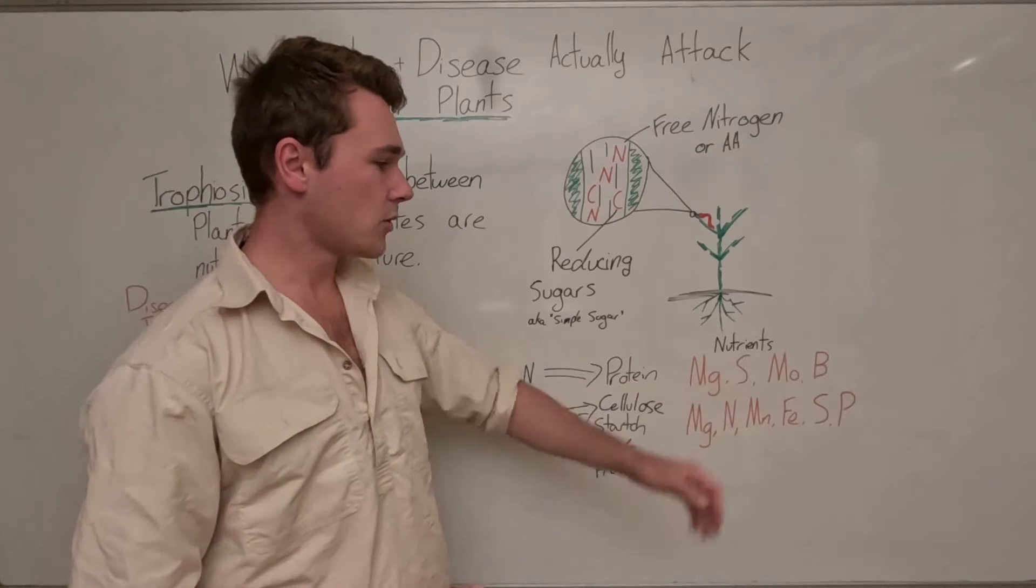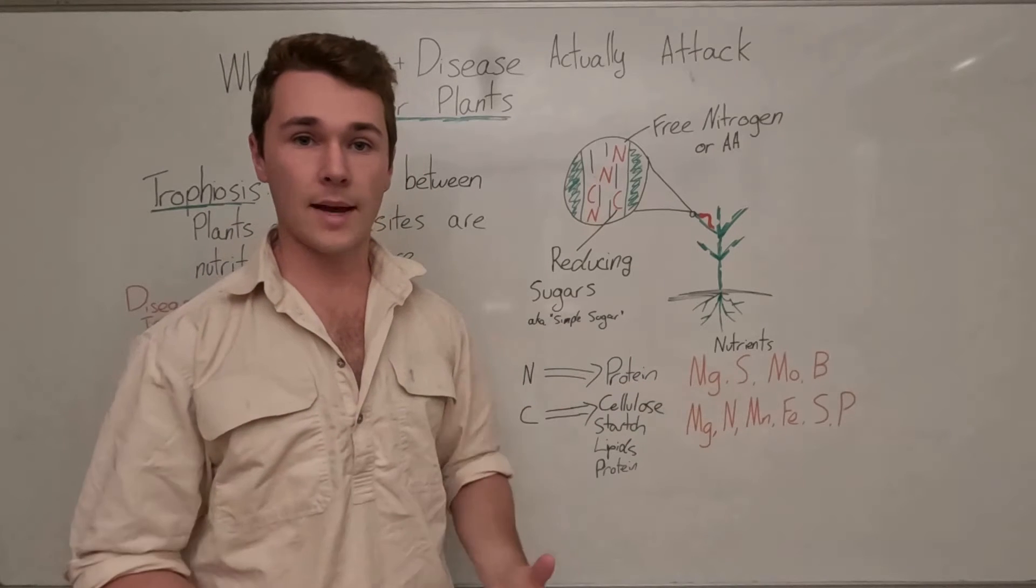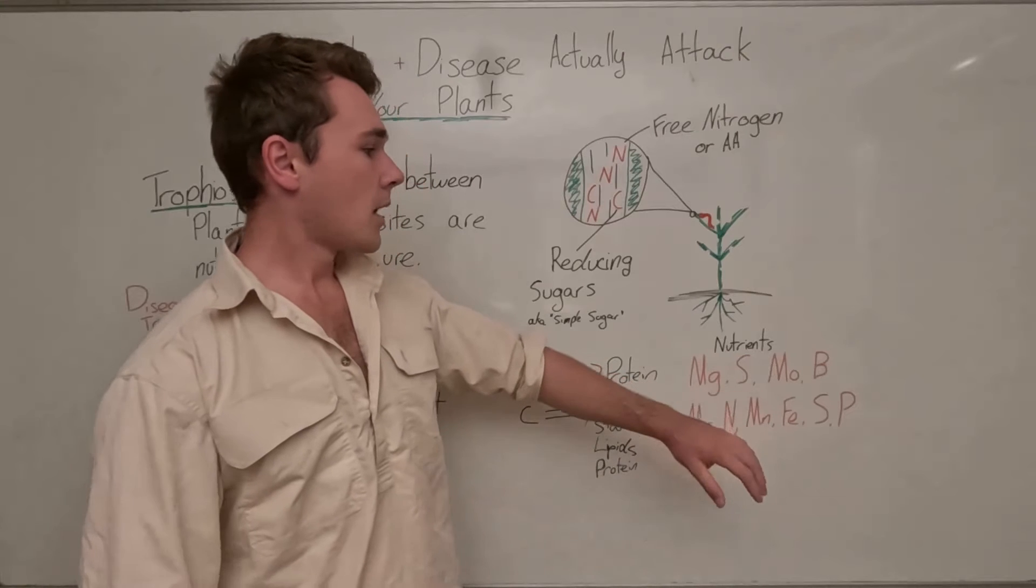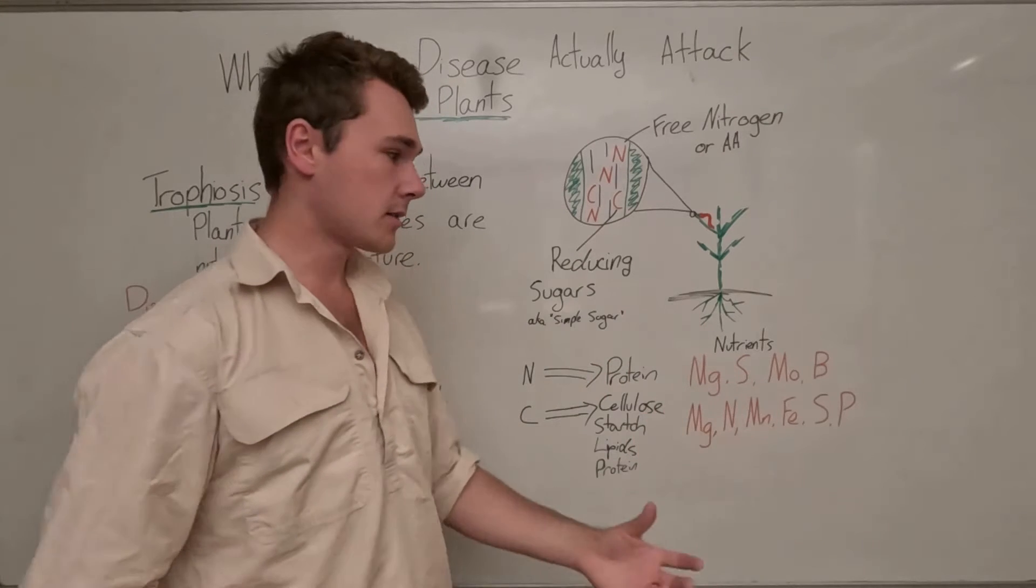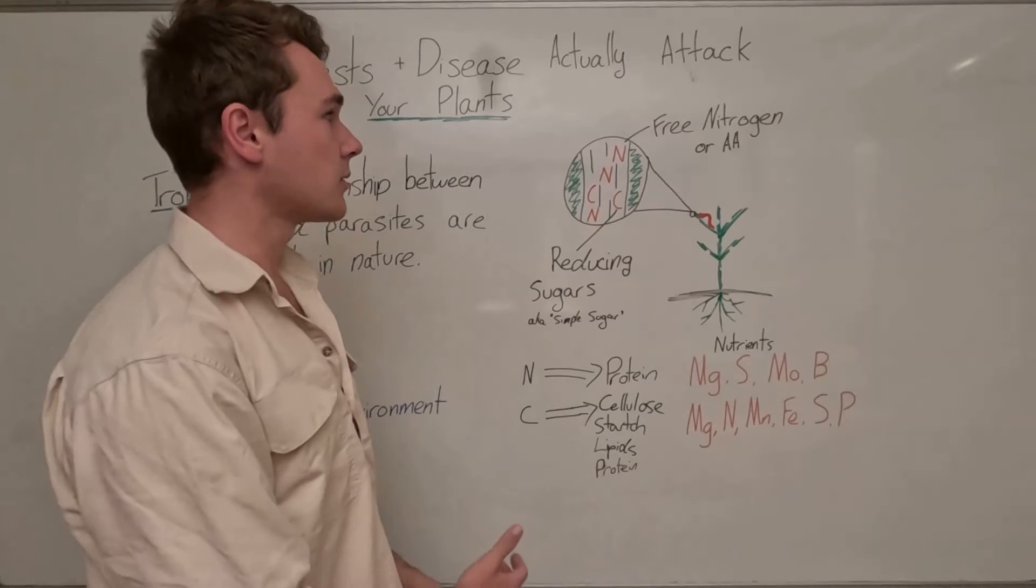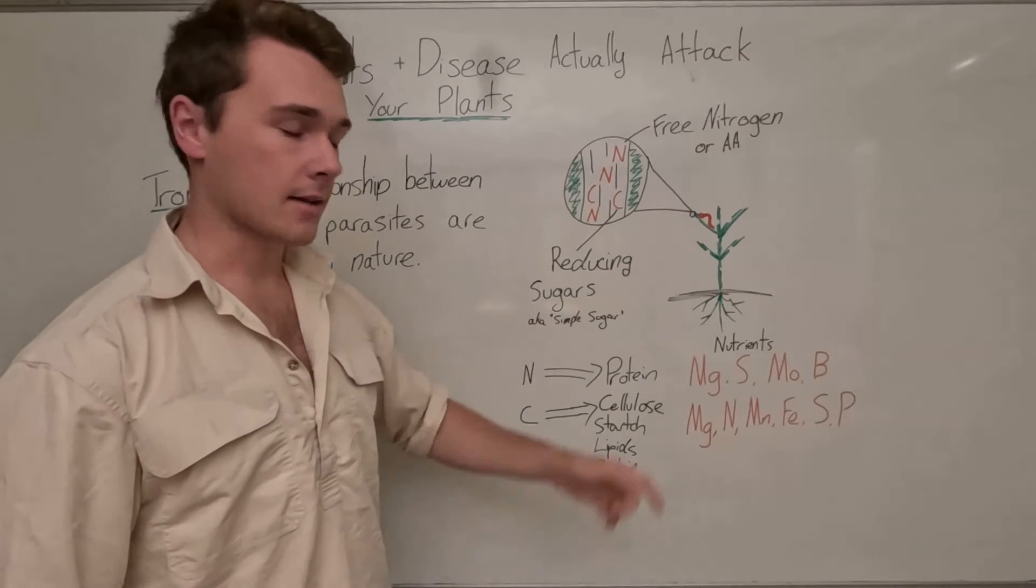Now S or sulfur is used in a few of our amino acids. So without sulfur, we're not going to have all the amino acids that we need to build complete proteins, and incomplete proteins are still susceptible to pest disease attack.